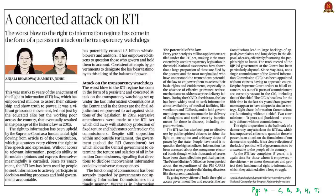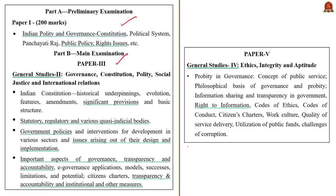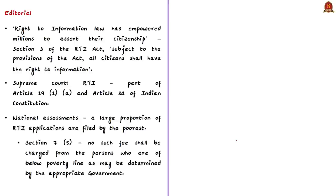This OPED article is about the citizen-empowering legislation for the Right to Information. The news article talks about persistent attacks made on the statutory institutions established by the Right to Information Act. The syllabus relevant to the analysis of this news article is highlighted here for your reference. The very first statement in the news article is that the Right to Information law has empowered millions to assert their citizenship, as per Section 3 of the RTI Act, all citizens shall have the right to information subject to the provisions of the act.